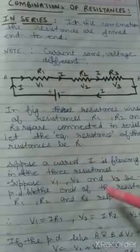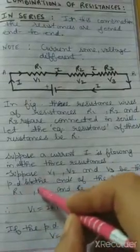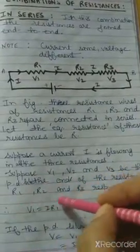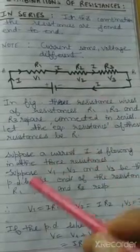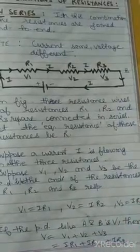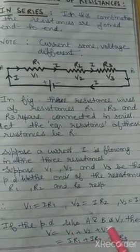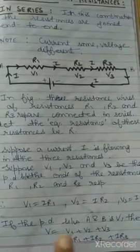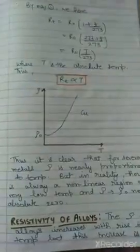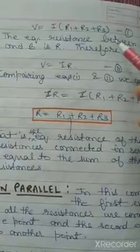Suppose the current I is flowing in all the three resistors. Also, suppose V1, V2, and V3 be the potential difference between the ends of the resistances R1, R2, and R3 respectively. Then by Ohm's law, V1 = IR1, V2 = IR2, and V3 = IR3. If the potential difference between A and B across this end be V, then V = V1 + V2 + V3. Putting the values, we get IR1 + IR2 + IR3, and since I is common, we get V = I(R1 + R2 + R3).